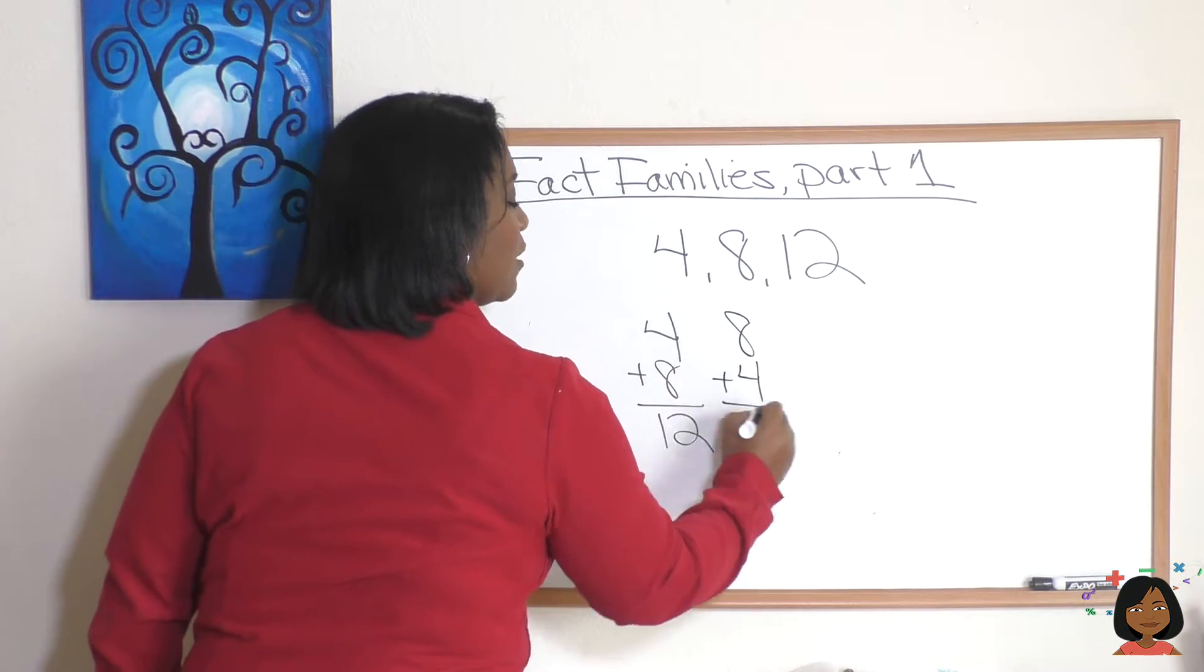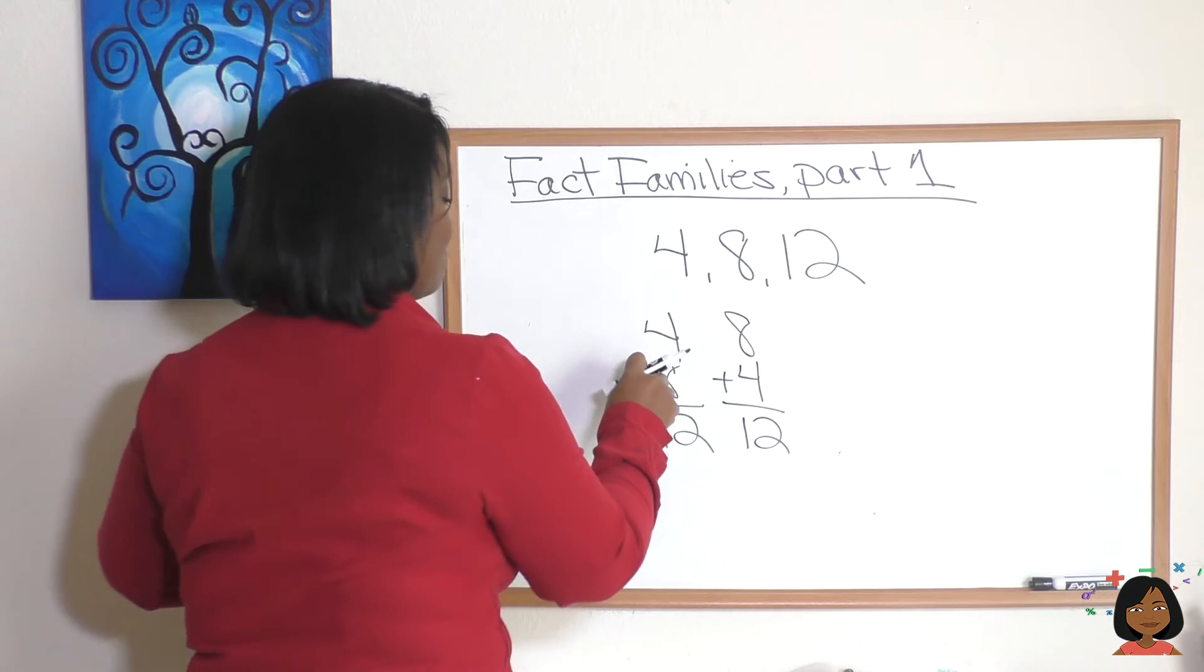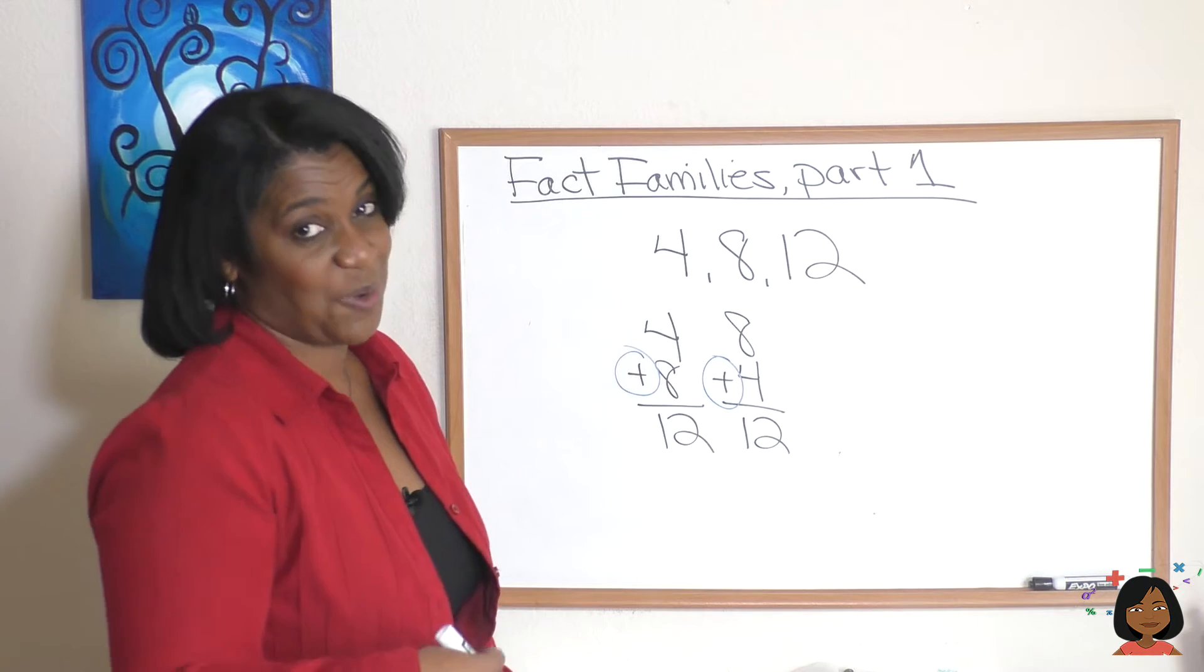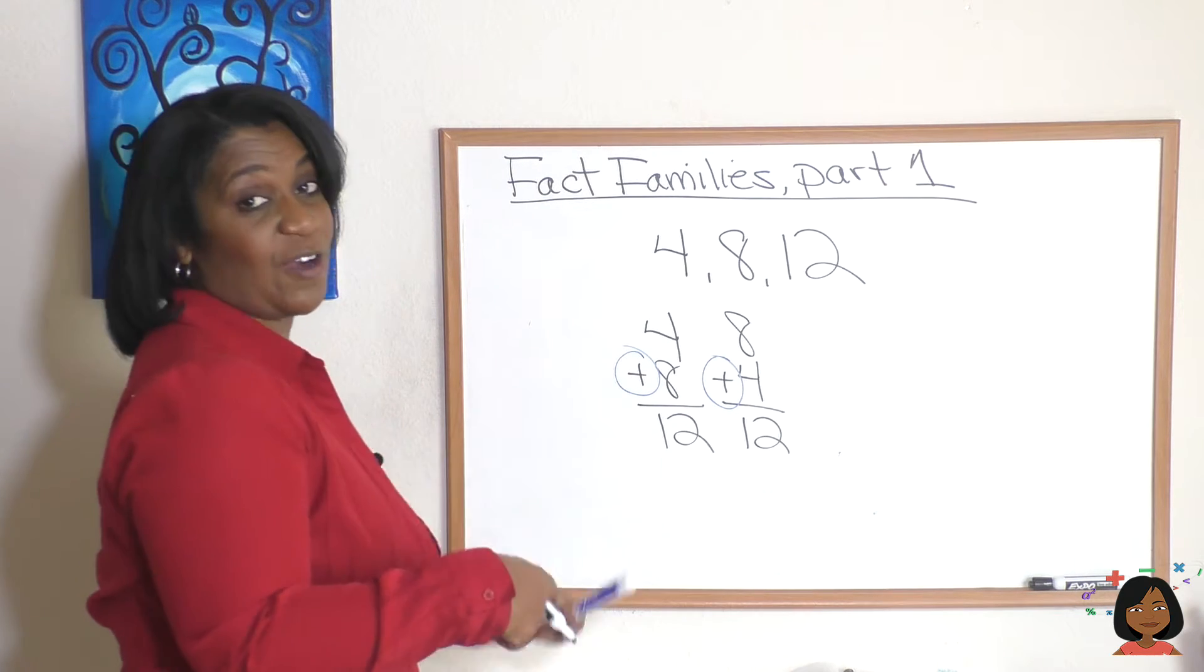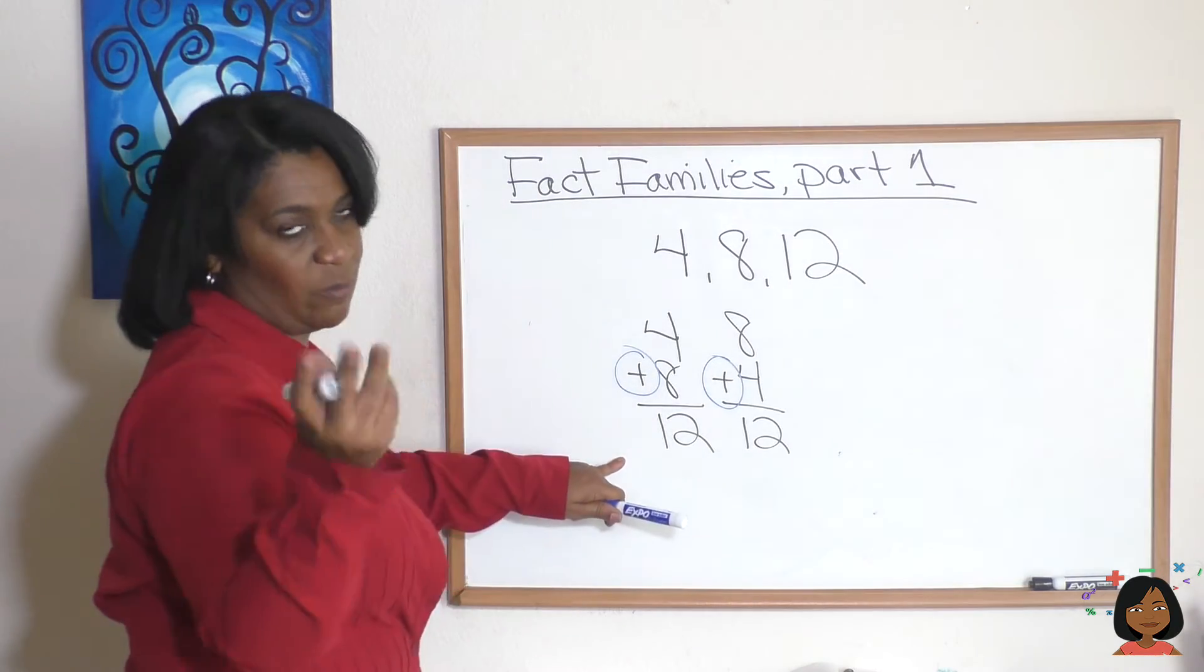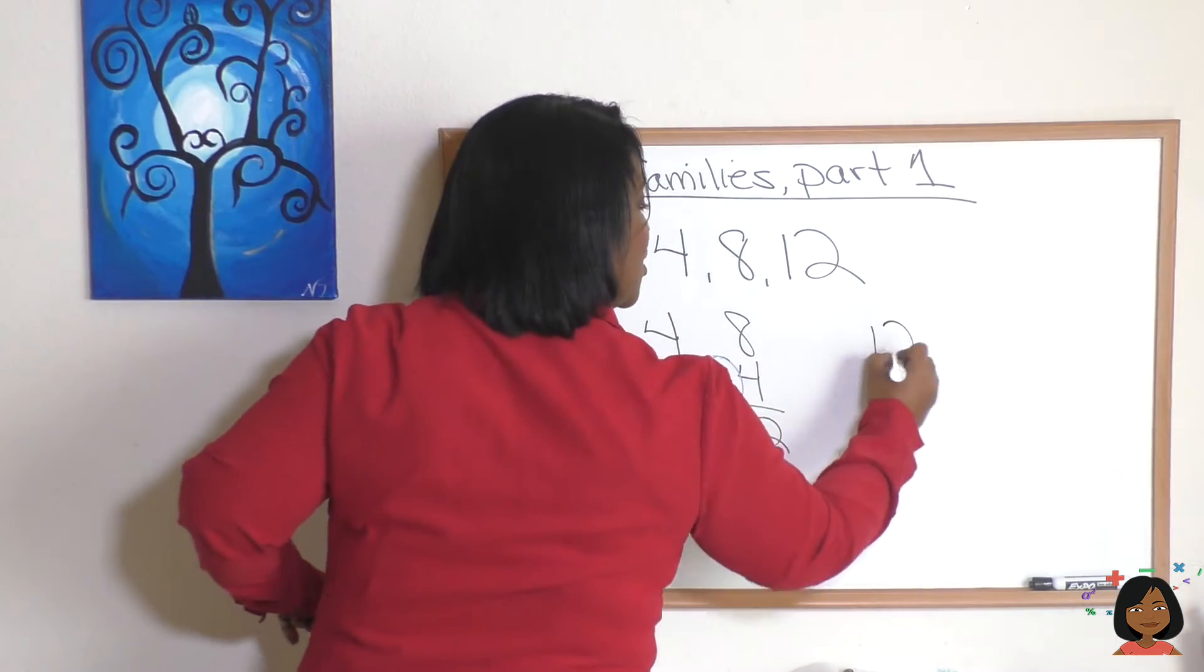So there's my two addition statements. If I have two addition statements which means that I've got two subtraction statements coming up. So we're going to start always with the sum. We're gonna start with the sum 12.